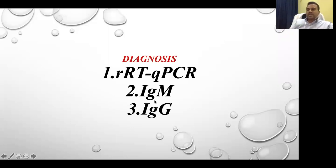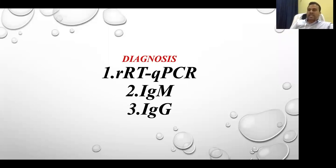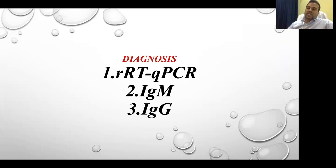The other two tests measure our antibody response: IgM and IgG — immunoglobulin M and immunoglobulin G. IgM means 'immediate' — easy to remember. The moment the virus enters the body, IgM may not appear immediately; it may take 5 to 7 days. But compared to IgG, it is immediate. IgG normally develops after 14 days. So the first test to be positive will be PCR, then around day 5 to 7 IgM will be positive, and by around day 14, IgG will be positive.